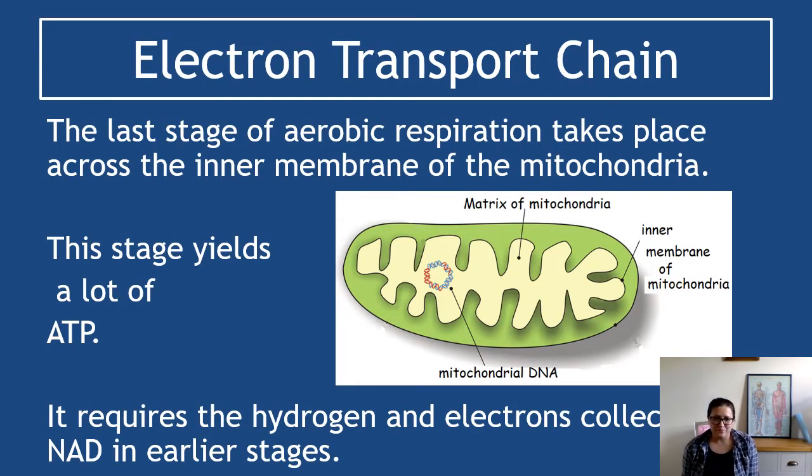So electron transport chain is the last stage of aerobic respiration and it takes place across the inner membrane of the mitochondria. So just like how we looked at the citric acid cycle in the matrix of the mitochondria, if you have a look at the picture you can see I've highlighted the inner membrane of the mitochondria and that's the membrane that runs between the matrix and the sort of outside bit of the mitochondria.